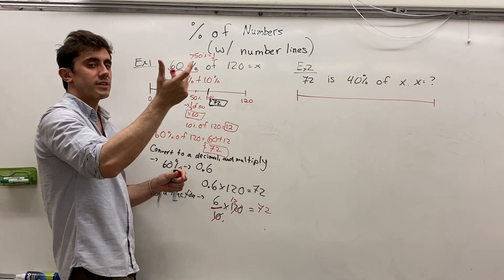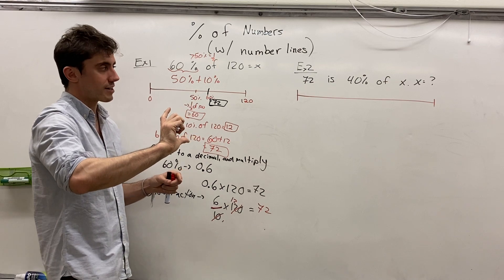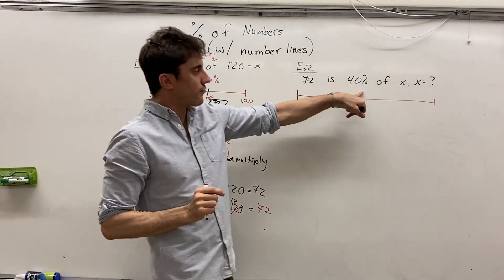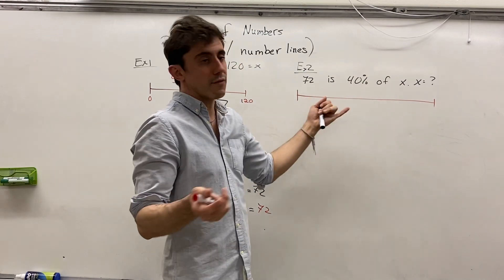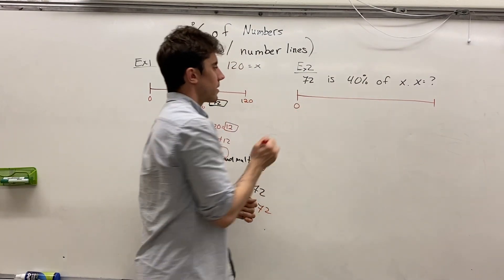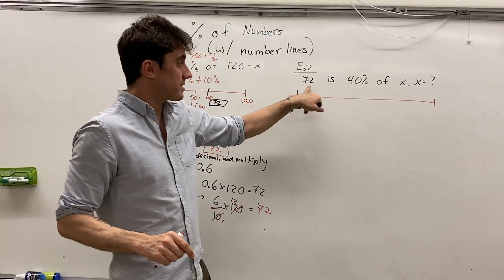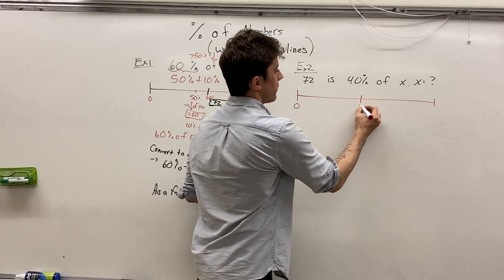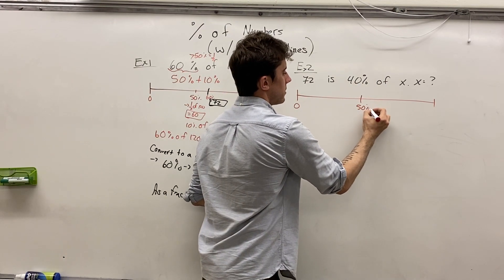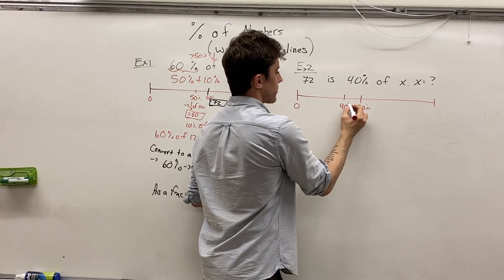Now for example, we're going to do kind of the opposite direction. If I tell you that 72 is 40% of x, some number x, then what is the value of x? So again, we're going to start out with 0. Now 40% of x is 72.